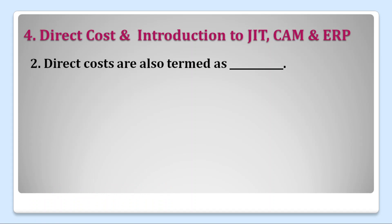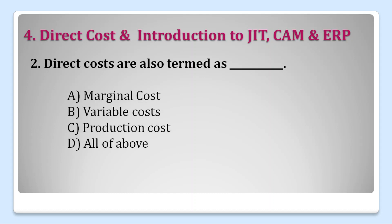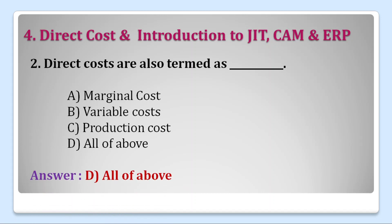Next question: Direct costs are also termed as — options are: A. Marginal Cost, B. Variable Cost, C. Production Cost, and D. All of the above. Direct Cost is also called Marginal Cost, Variable Cost, and Production Cost. So our right answer is D. All of the above.